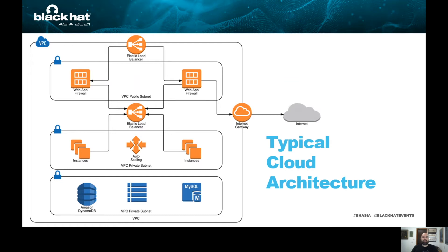If we look at a typical cloud architecture, we can see there are a lot of components. Some architectures are much more complicated than that. Each component or building block of this architecture can be configured by infrastructure as code or configuration files. Many of them can be configured by single files or separate files. And we know that if we have a lot of options and a lot of areas to make mistakes, mistakes will happen.